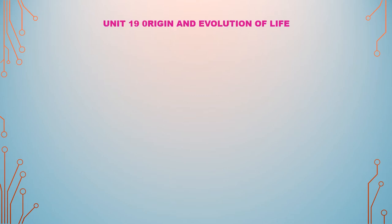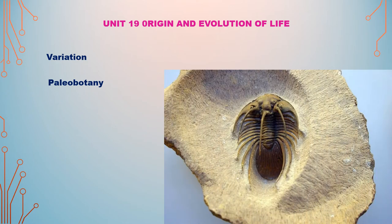Good morning students. Today we are going to see unit 19, origin and evolution of life. Last video we saw the same unit in the theories of evolution, Lamarckism and Darwinism. This video we are going to see variation, paleobotany, and fossilization. Let's see one by one in detail.